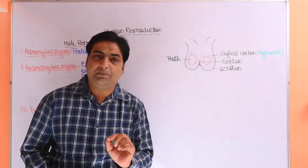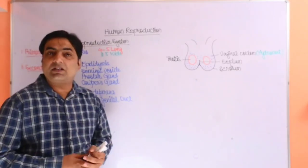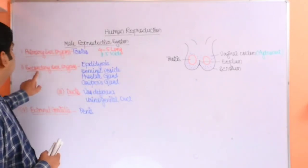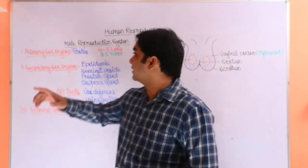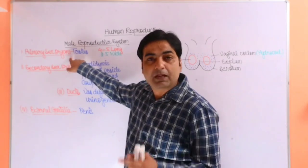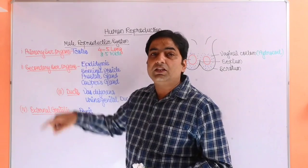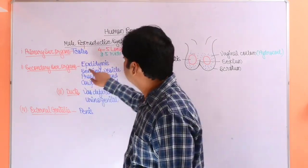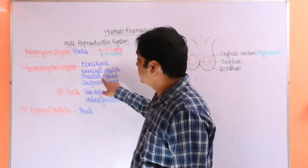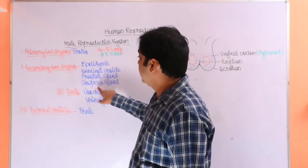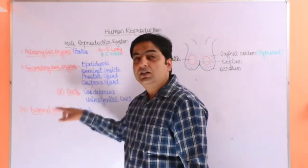The primary organ of male reproductive system is testes. Secondary sex organs, or accessory organs, contain epididymis, seminal vesicle, prostate gland, and cowper's gland. These all four are considered as secondary sex organs.